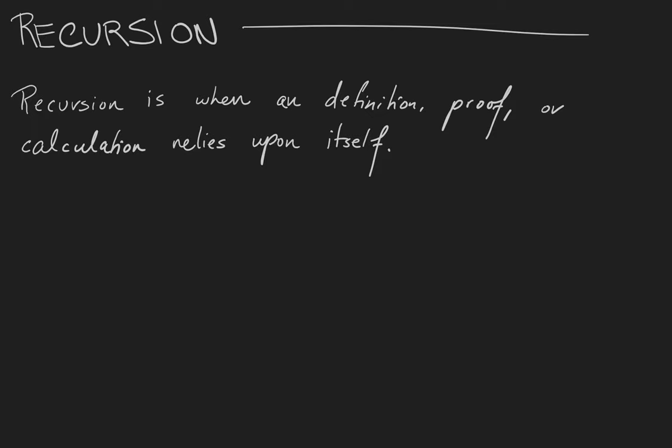In this video we're going to talk about recursion, which is a really important idea in mathematics and computer science. Recursion is when a definition, proof, or calculation makes reference to or relies upon itself. It's a hard idea to explain but easy to show examples of, so we're going to hop right into an example.